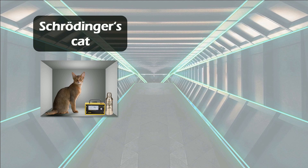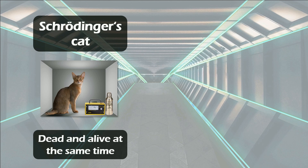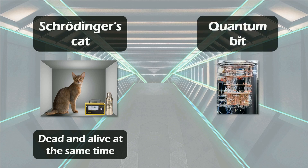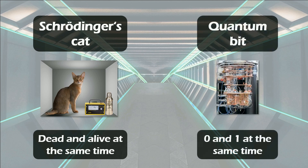Most of you certainly know that Schrödinger's cat can be dead and alive at the same time, but only until the moment when you look at this cat. So it has two states, and at the moment when you look at it, one of the states gets lost and only the other one survives. This is very similar to the way a quantum bit works. A quantum bit can be zero and one at the same time, but only until the moment when you perform a read access.